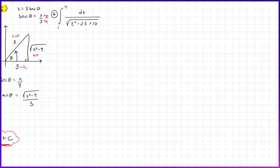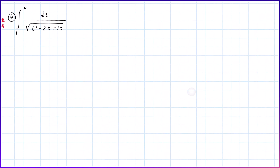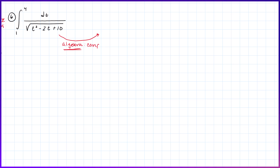Let's do one more example. We have the integral from 1 to 4 of dt over the square root of t² minus 2t plus 10. This is not yet in the form x² ± a² or a² − x², so we have some algebra to do first — specifically, we want to complete the square.